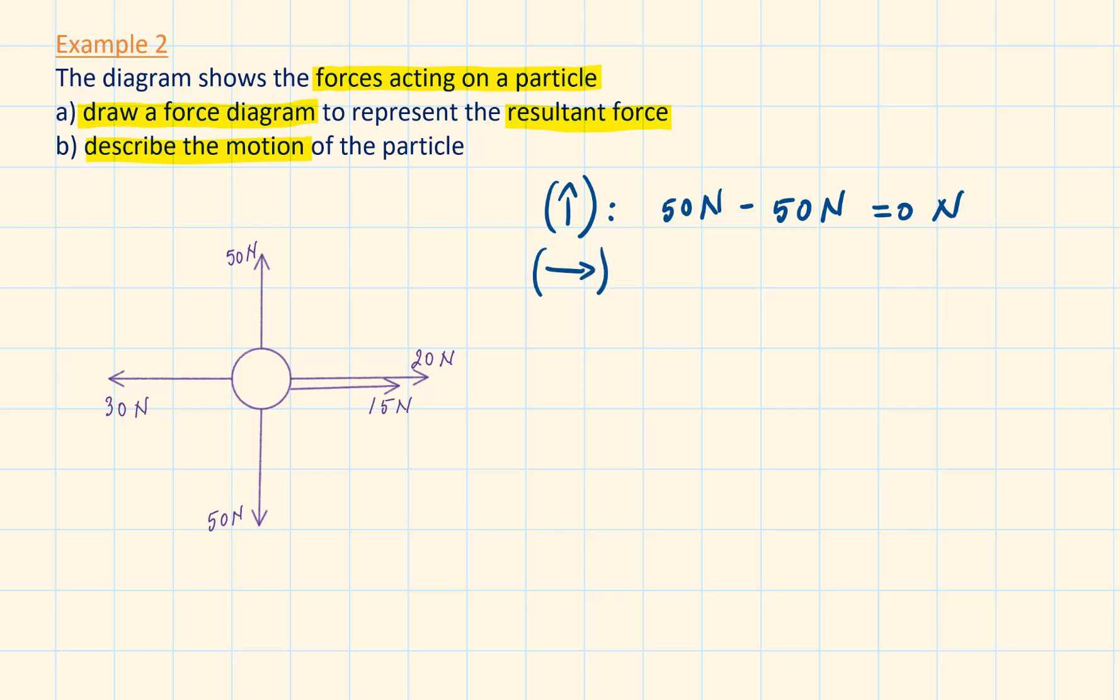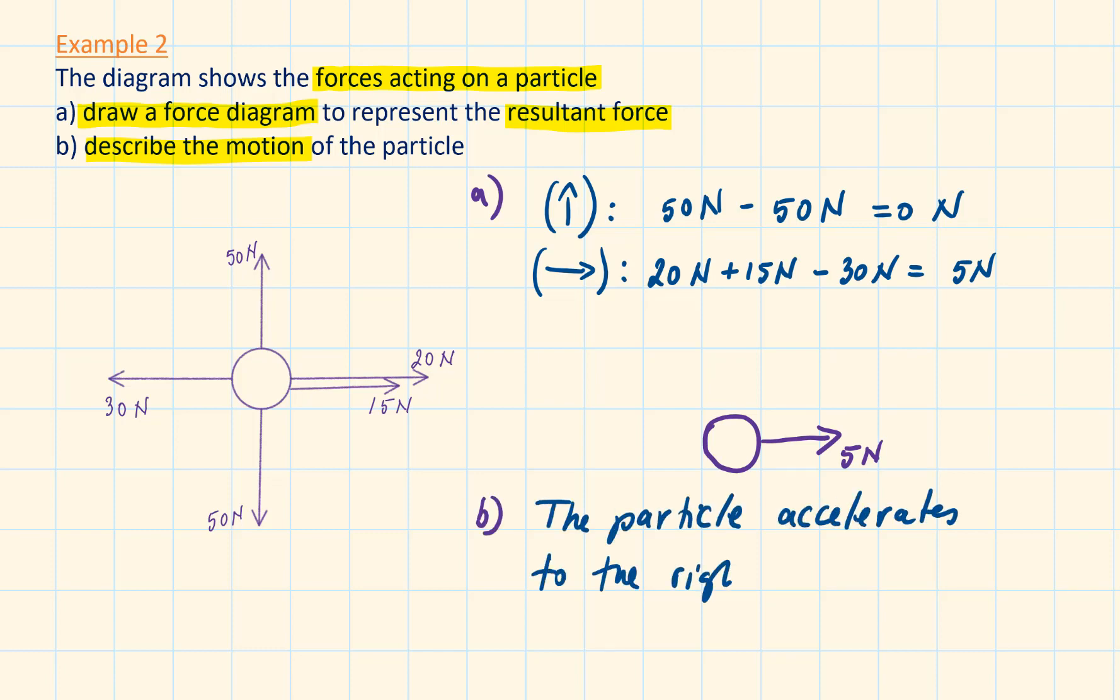Resolving the forces horizontally to the right we have 20 newtons plus 15 newtons minus 30 newtons equals 5 newtons. Therefore, the particle will accelerate to the right.